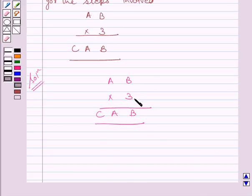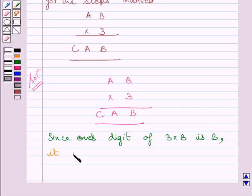Now, clearly you can see units digit of 3 multiplied by B is B. So, we can write, since 1's digit of 3 multiplied by B is B, it must be that B is equal to 0 or B is equal to 5.